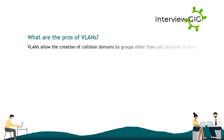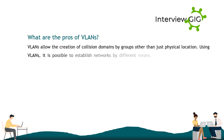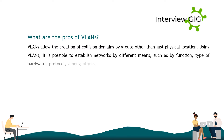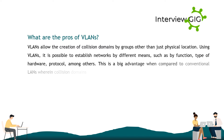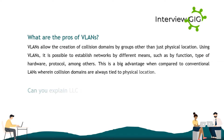What are the pros of VLANs? VLANs allow the creation of collision domains by groups other than just physical location. Using VLANs it is possible to establish networks by different means such as by function, type of hardware, or protocol, among others. This is a big advantage compared to conventional LANs where collision domains are always tied to the physical location.